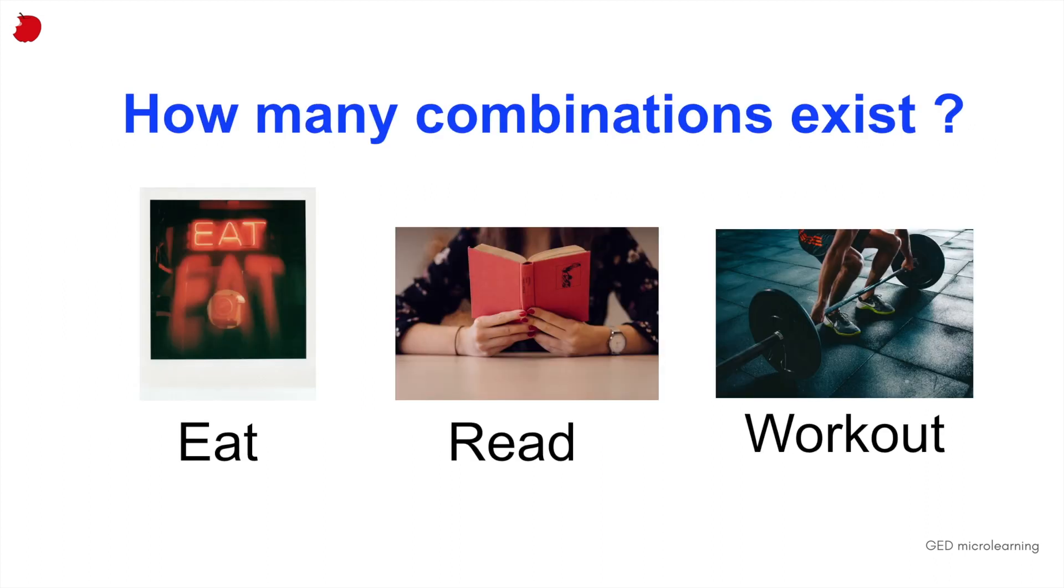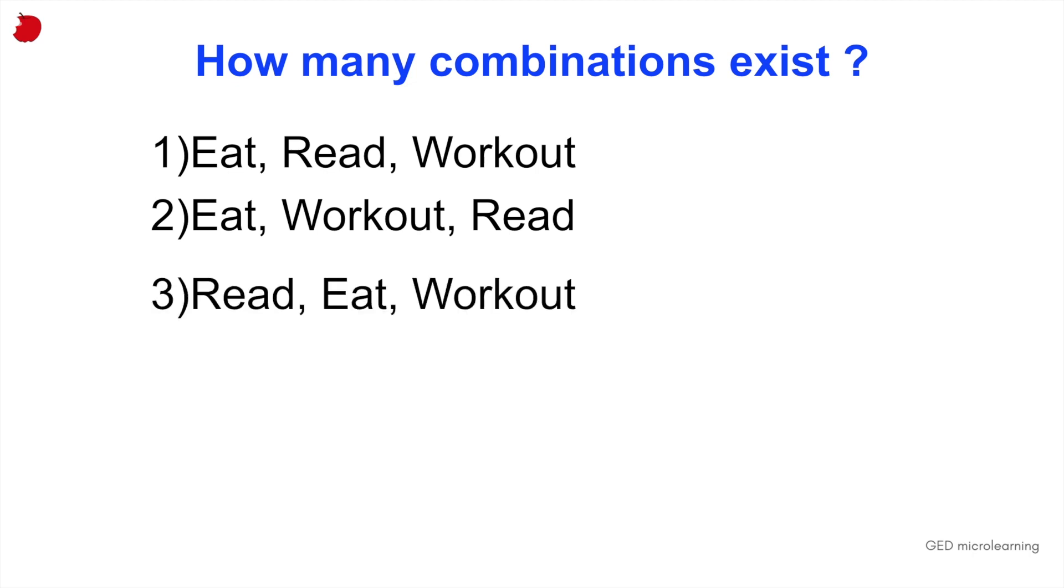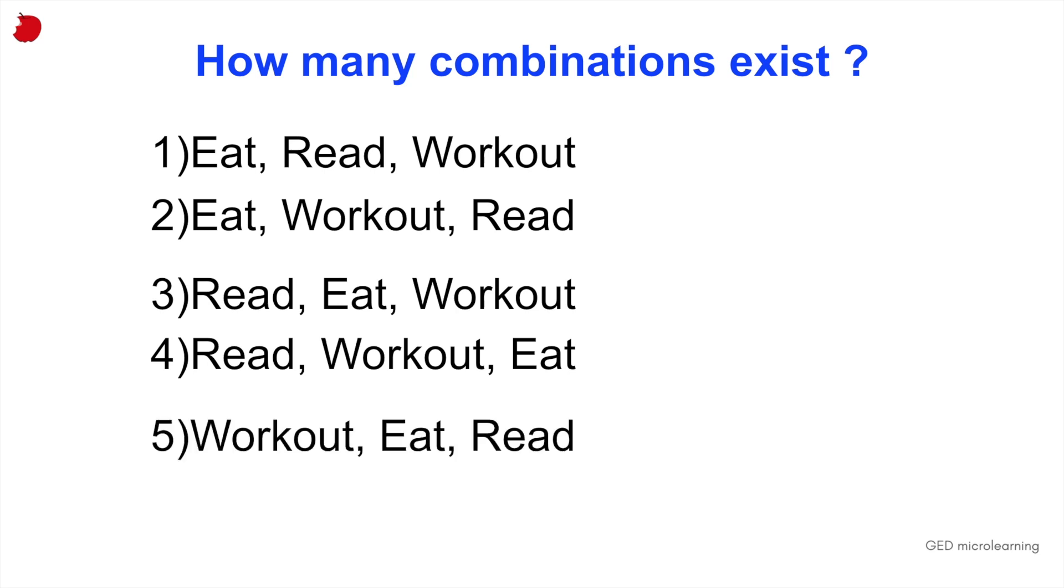One option would be to do it manually. So let's do one example manually. Let's say you have to eat, read, and work out today. So how many combinations, in how many different orders rather, could you do this? Well, you could first eat, then read, and then work out, or you could eat, work out, and then read. You could also read, eat, and then work out, or read, work out, and then eat. Or finally, you could start your session working out, eating, then reading, or working out, reading, and then eating. You can see that this is a little bit of a tedious process to do, but it's doable when you have few combinations. So in total, we would have six combinations.